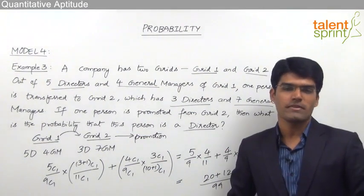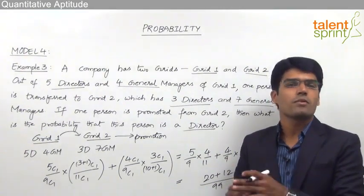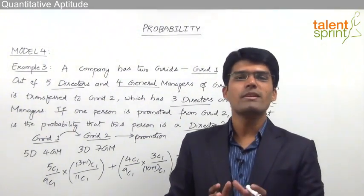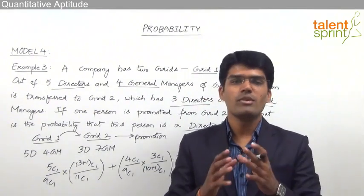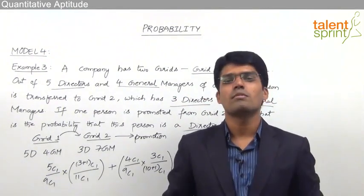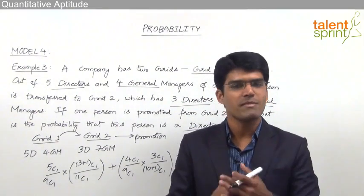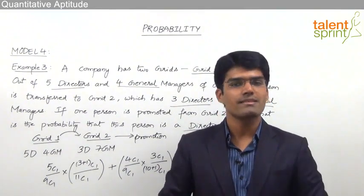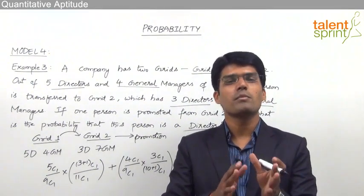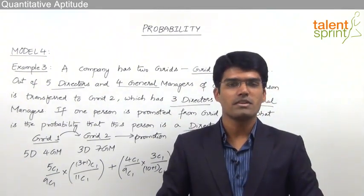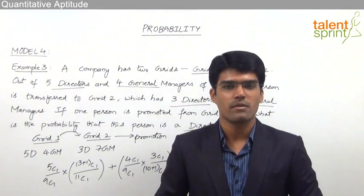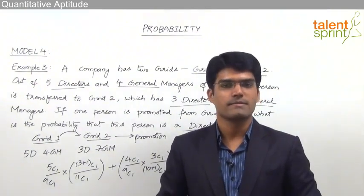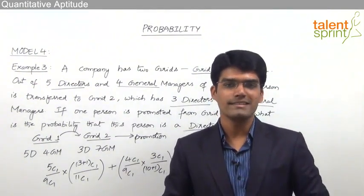This is how we solve such typical probability questions by taking the probability of each possible case and adding them to get the required answer. Probability is based on permutations and combinations — it is the number of favorable combinations by total combinations. Practice well on probability questions, especially the 5-marks questions from Model 3, as those are the most popular in bank exams. That's all from this topic of probability. See you in the next session.